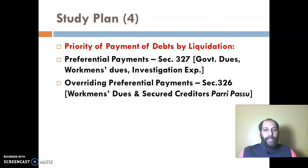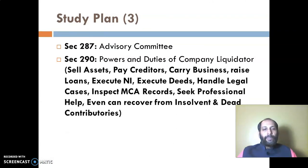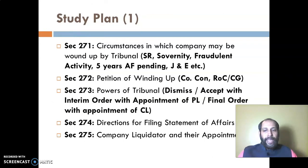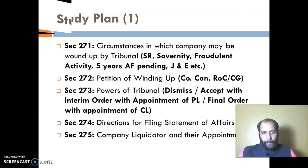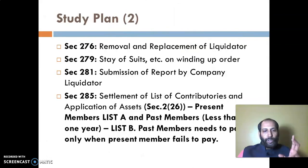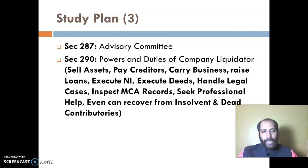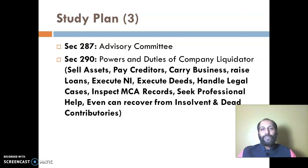To recap the important areas from this video: Section 271 - circumstances of compulsory winding up; Section 272 - who can file a petition; Section 273 - powers of tribunal; Section 285 read with Section 2(26) - contributory, very important for exam; Section 290 - powers and duties of company liquidator. The remaining parts will be covered in the second video. Thank you.